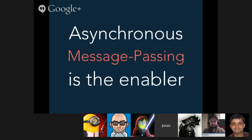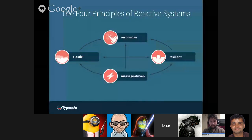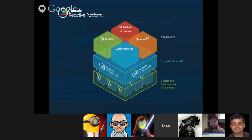Asynchronous message passing is the enabler — it is the low-level underpinning of both elasticity and resilience, and ultimately of responsive systems. I founded Akka to try to address these things through a fully message-passing architecture delivering resilience through isolation and a share-nothing architecture.